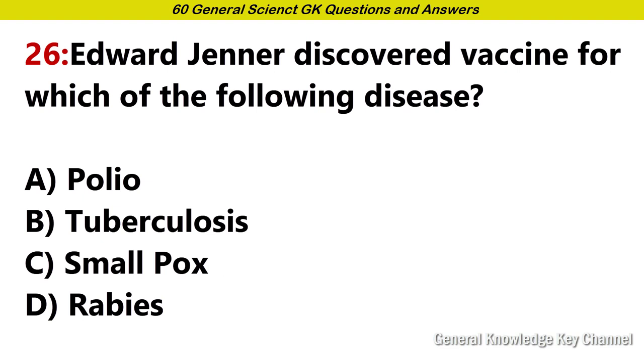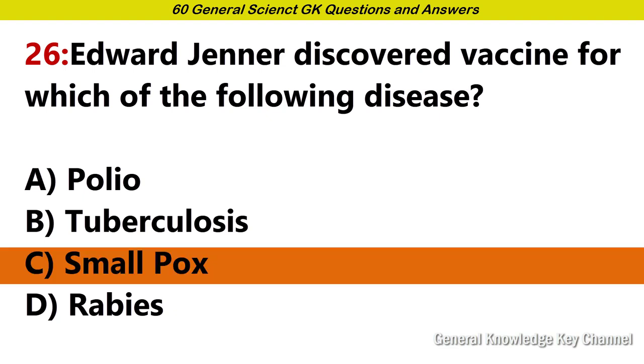Edward Jenner discovered a vaccine for which of the following disease? Answer C. Smallpox.